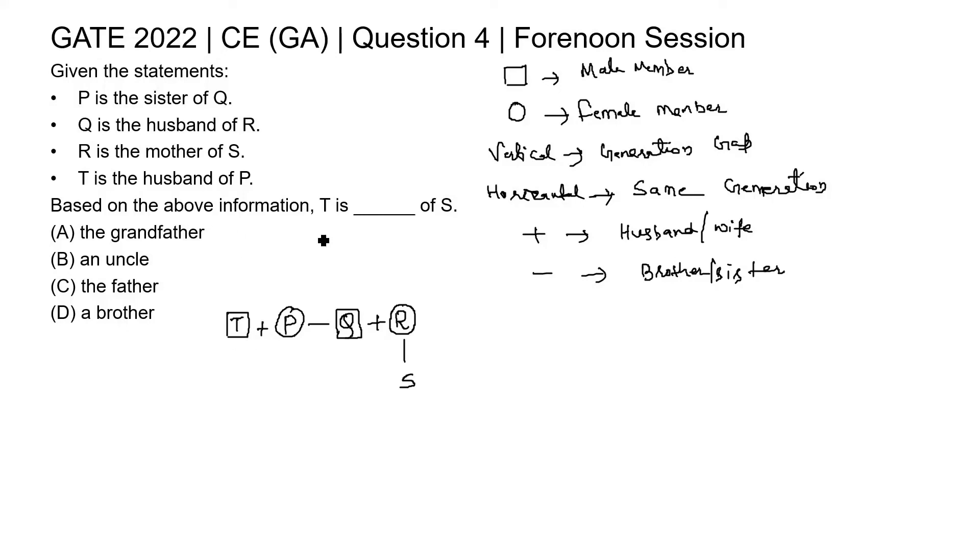Based on the above information, T is blank of S. What is the relationship between T and S? R is the mother. Mother's husband obviously, Q is father. Father's sister is aunt and aunt husband is uncle.